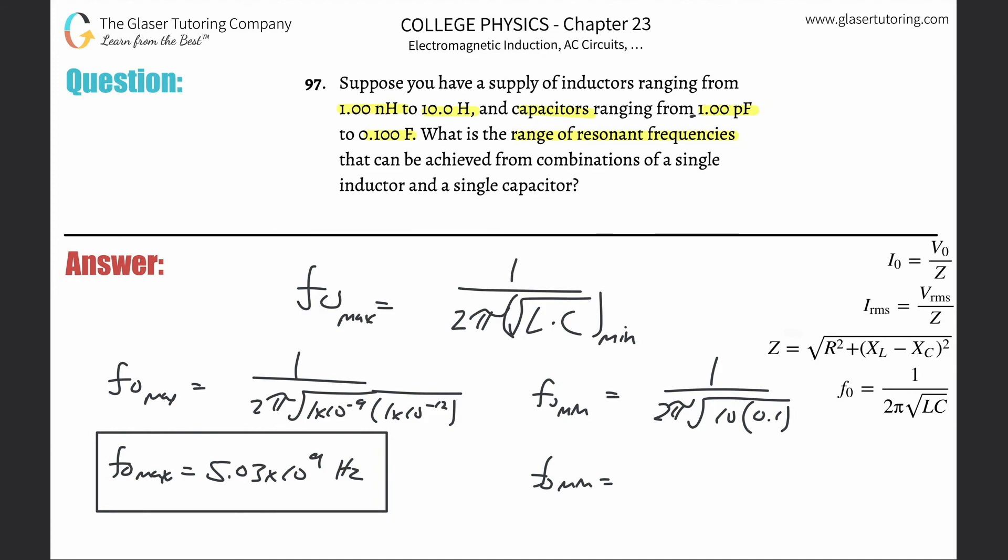This is going to be 1.59×10^-1 hertz. That's the minimum. So that's the range—you see how that worked out. That's the minimum and the max. Thank you so much for tuning in. Please help us out by subscribing if you're able to and liking the videos—it really helps the algorithm. Hopefully these are helping. Be well!